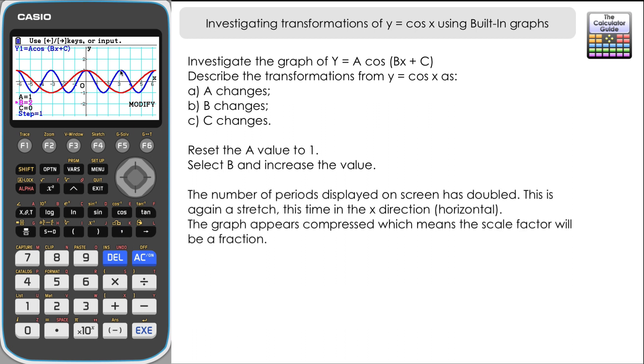You can see that the maximum and minimum are still the same but the number of periods that are displayed on the screen has increased. In fact there's twice as many displayed as there were previously. You can see that the graph actually follows this pattern of going from a maximum of 1 down to negative 1 and back to the maximum of 1 when the original graph has only reached that minimum of negative 1. We've essentially got twice as many displayed on screen. Now this is going to be a stretch in the x direction, but the scale factor is going to be a half on this particular graph.